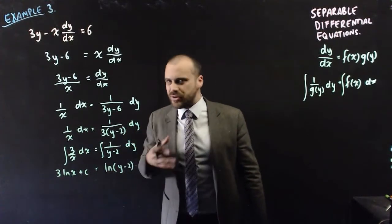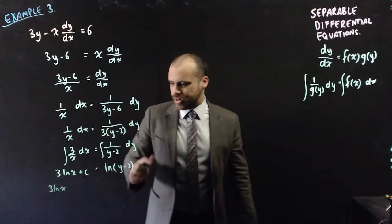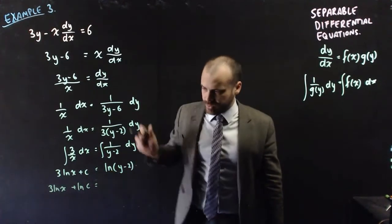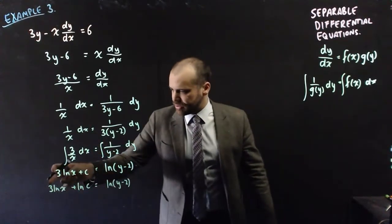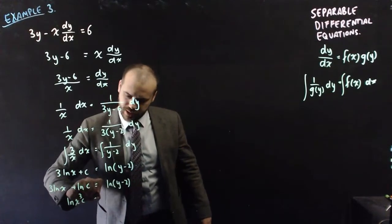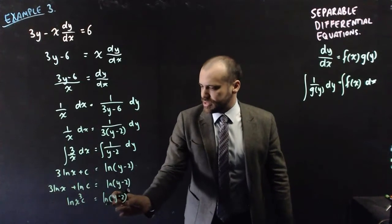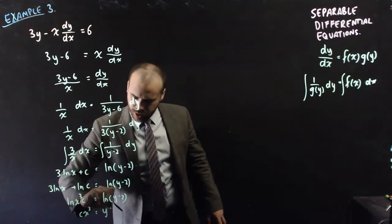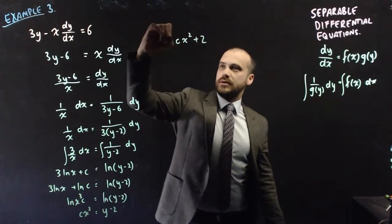A sneaky trick: rewrite the constant c as ln(c), since a constant is still a constant in any form. This lets us combine the logs: 3 ln(x) plus ln(c) becomes ln(x cubed) plus ln(c), which by log laws equals ln(cx cubed). So ln(cx cubed) equals ln(y minus 2), meaning cx cubed equals y minus 2, and therefore y equals cx cubed plus 2. That is the solution.